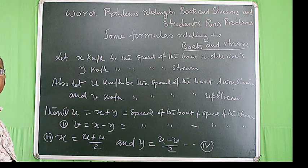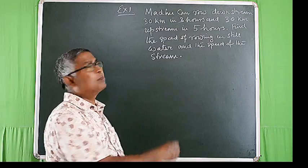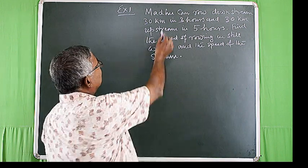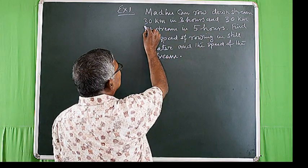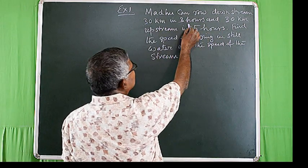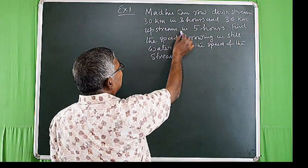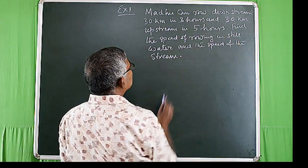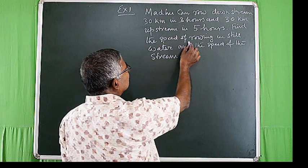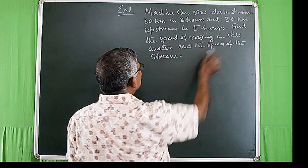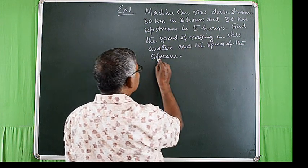Students, let us solve the problem. Modu can row downstream 30 kilometers in 3 hours and 30 kilometers upstream in 5 hours. Find the speed of rowing in still water and the speed of the stream.